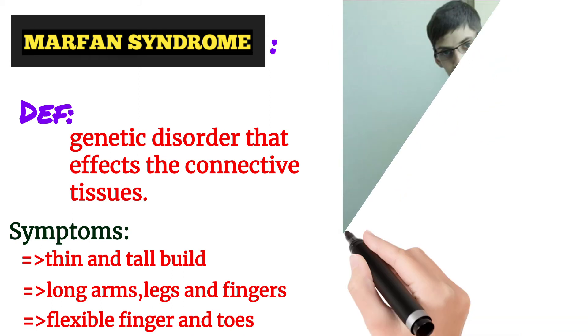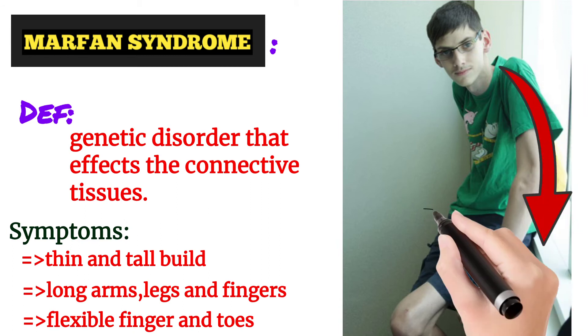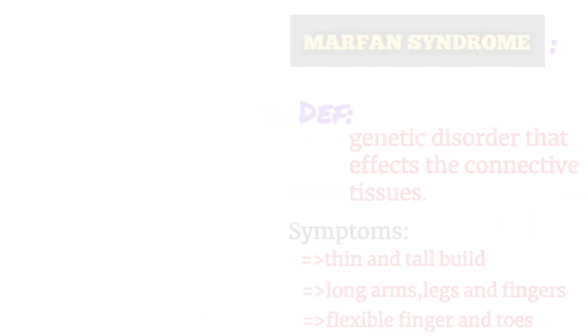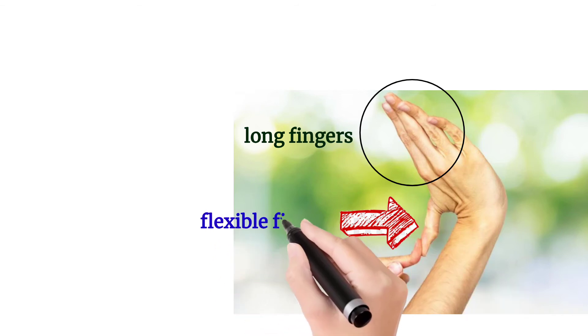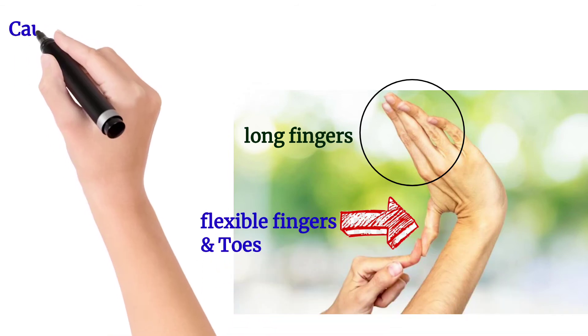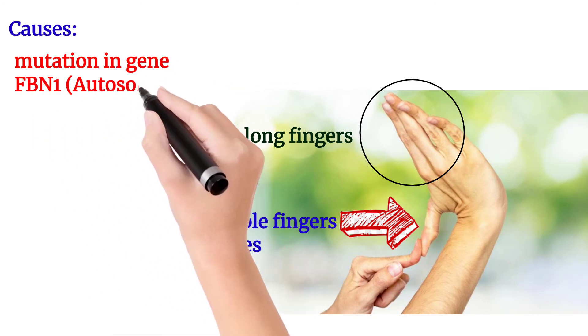The signs and symptoms include being thin and tall with long arms, legs, and fingers, and flexible fingers and toes. Here you can see in the picture the patient has long arms, legs, and a tall, thin body. There is another picture shown here where the Marfan syndrome patient has long fingers and also flexible fingers and toes.